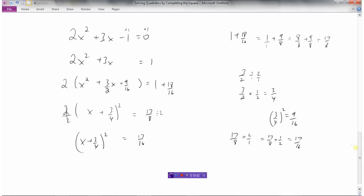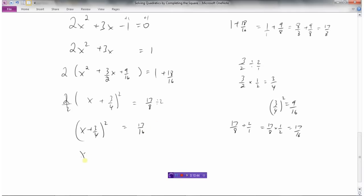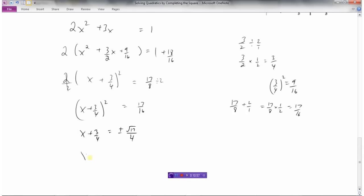So 17 sixteenths is good. Now we can square root both sides. So when I square root 17 we don't know what that is, we'll leave that as root 17. The square root of 16 is 4. And plus or minus on that. And finally to isolate x we would minus 3 fourths from both sides.